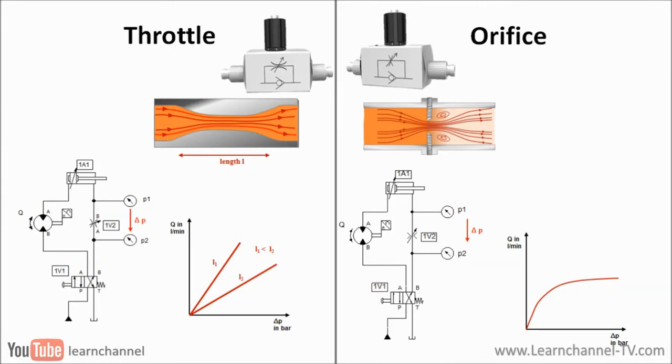The graph below shows a comparison of the volume flow between a throttle and an orifice as a function of the pressure difference. As you can see, the volume flow at an ideal throttle with a soft transition from thicker to thinner diameter increases roughly proportional to the pressure, provided that the flow is maintained as laminar.